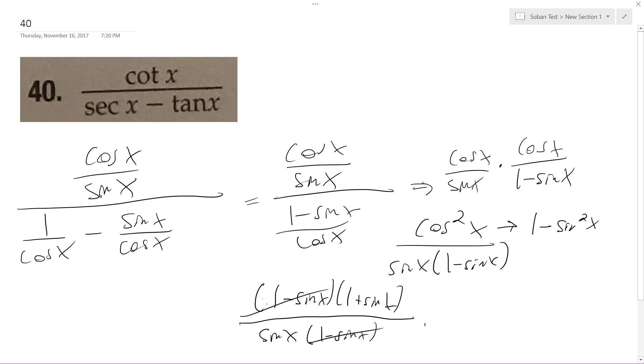this cancels out, and I'm just left with 1 over sine of x, plus sine of x, over sine of x, these cancel out, and I get cosecant x plus 1. And that's it, hope that helps. There you go.